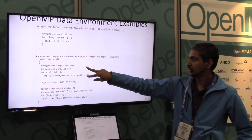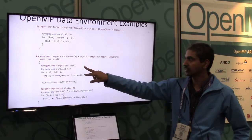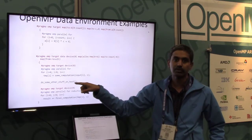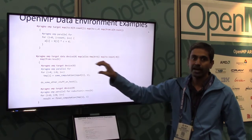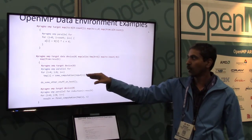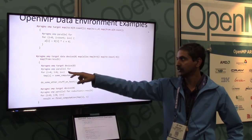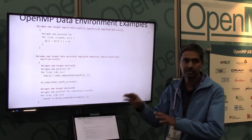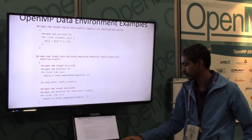This is a more complicated example that shows two OMP target constructs inside the data environment, and in between, you are doing some work on the host. The data environment defines a region, and inside that you can have multiple target constructs which define what needs to be executed on the target. Each of these uses OMP parallel for for work partitioning among the threads on the device, and in between you are doing some work on the host.